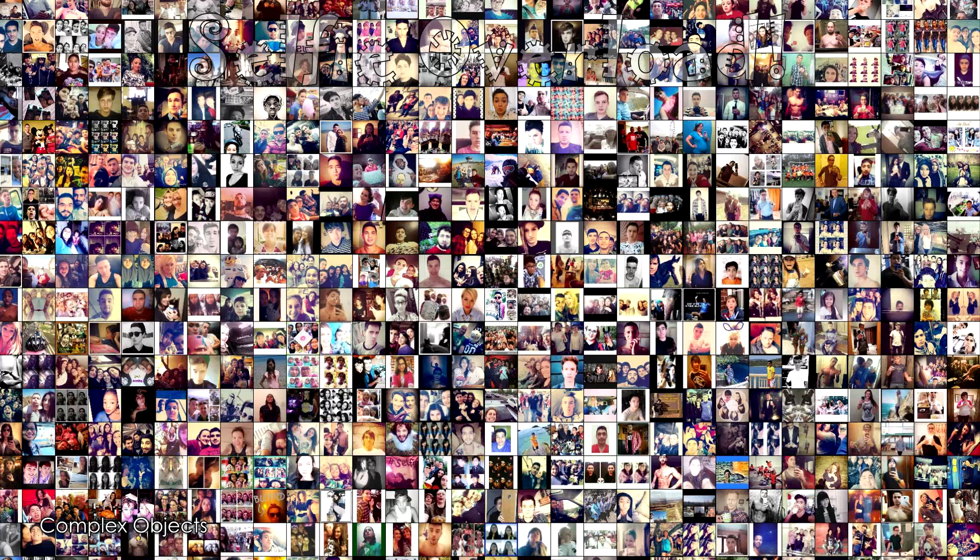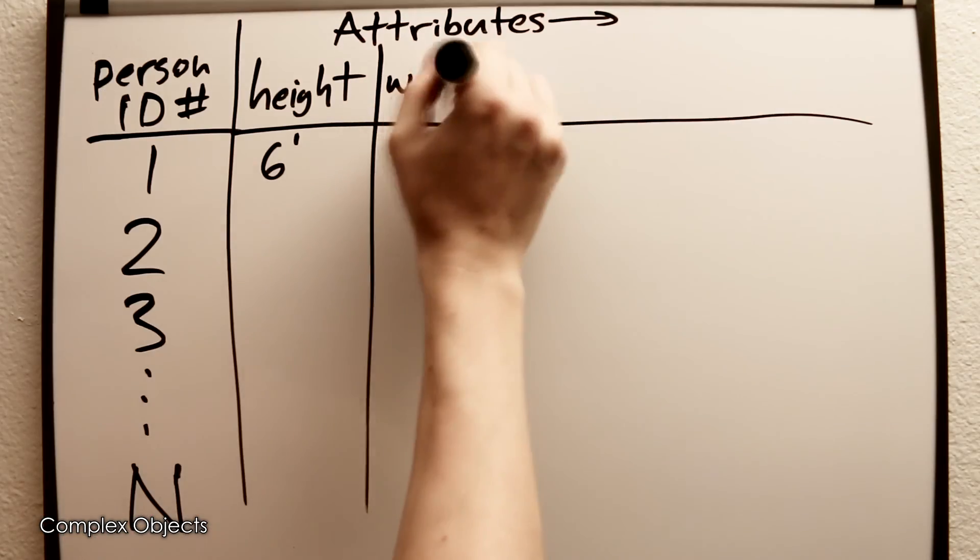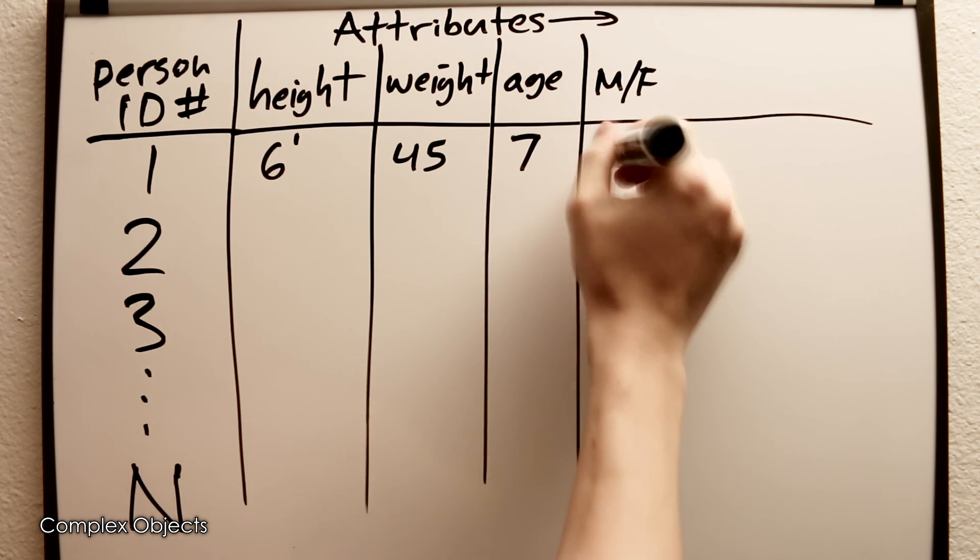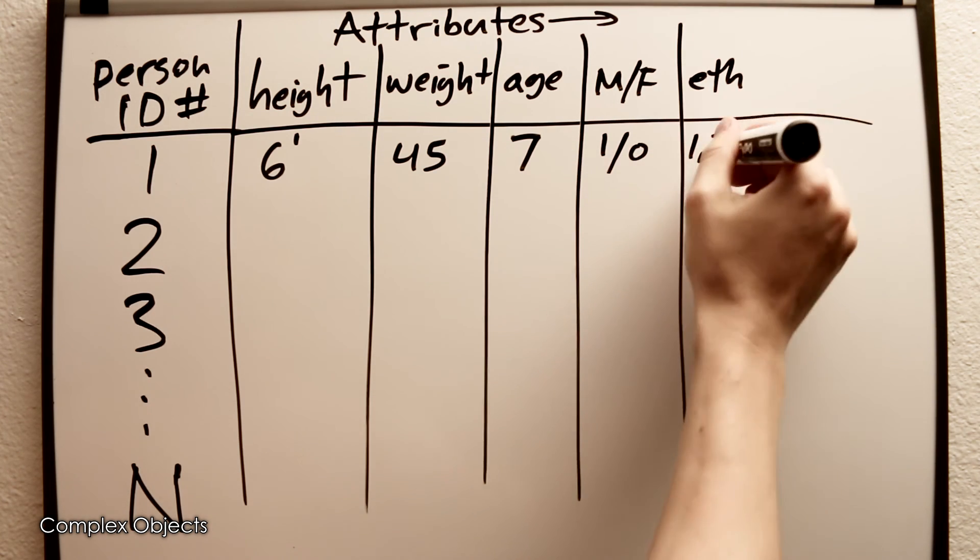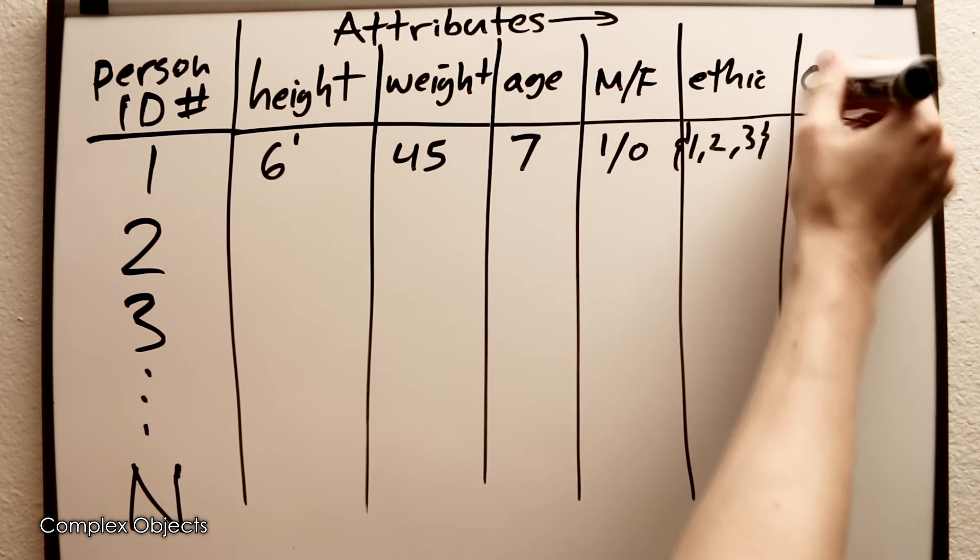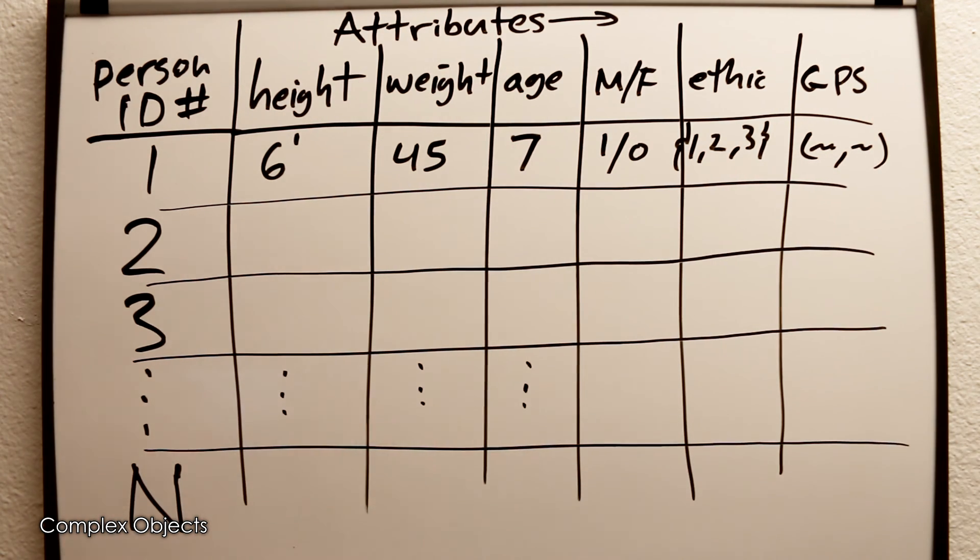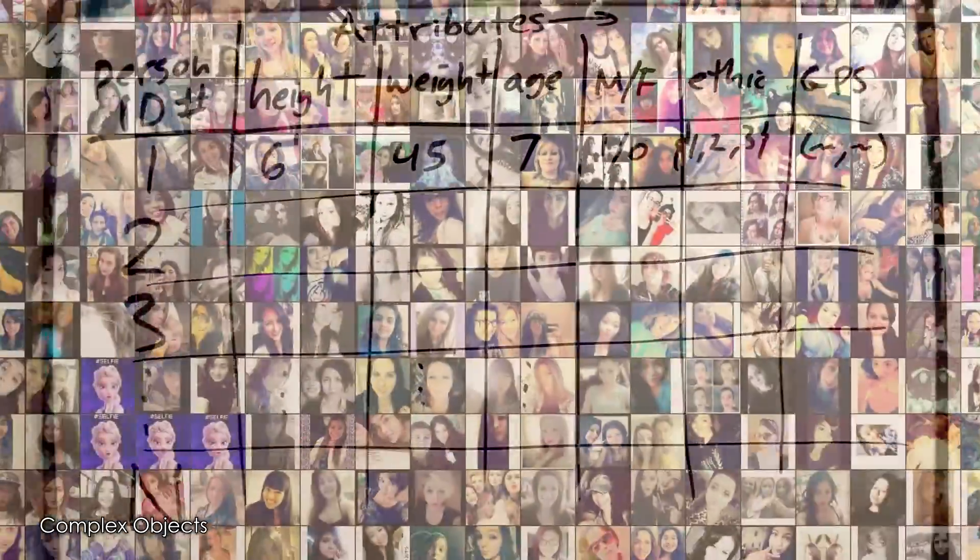So for example, a person. If you wanted to represent a human being as a data point, you have information about them which you can list such as their height, weight, their age, their sex, their ethnicity, or where their home is located. It's reasonable that you could get a hundred different unique pieces of information to represent one person. So each person becomes a single point in a hundred dimensional space. It just means they have a hundred numbers associated with them.